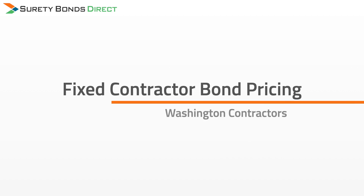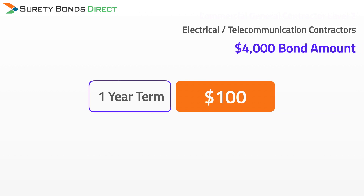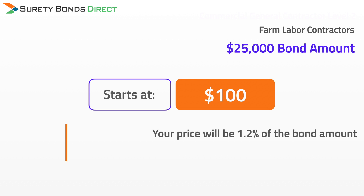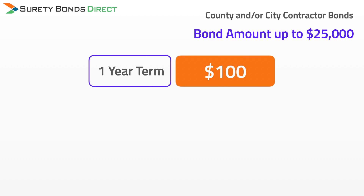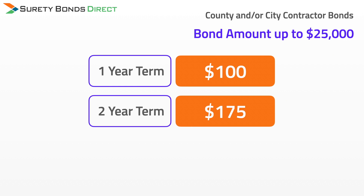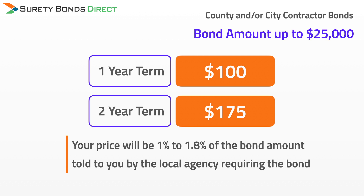Fixed bond pricing with zero credit check: For electrical telecommunications contractors, the bond amount is $4,000. You can purchase a one-year term for $100, or a two-year term for $175. For the farm labor contractor, the bond amount is $25,000, and pricing starts at $100 — your price will be 1.2% of the bond amount told to you by the Department of Labor and Industry. For any county or municipal contractor bond requirement, the bond amount varies up to $25,000. A one-year term starts at $100, a two-year term starts at $175, and the final price will be 1% to 1.8% of the bond amount specified by the local agency.